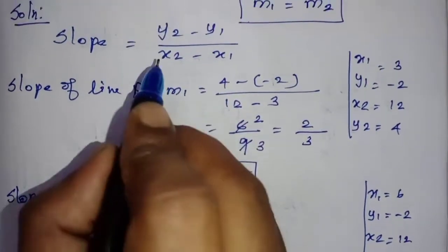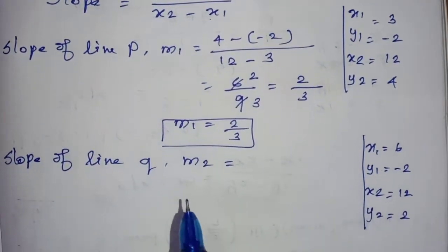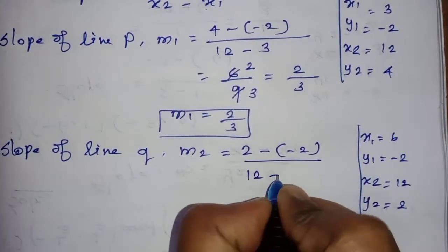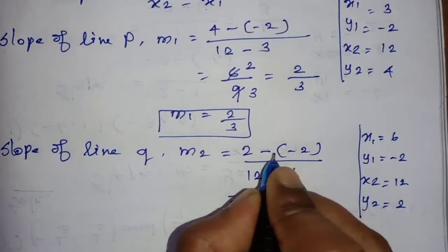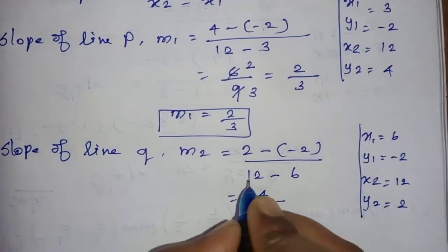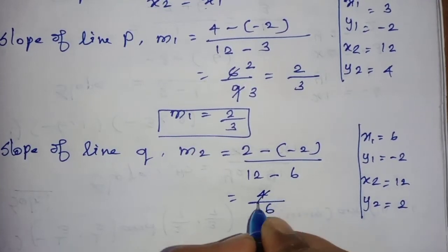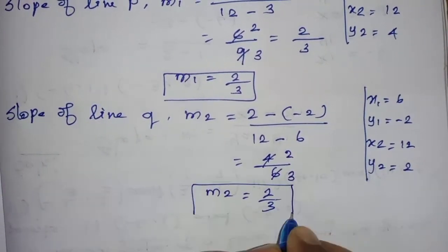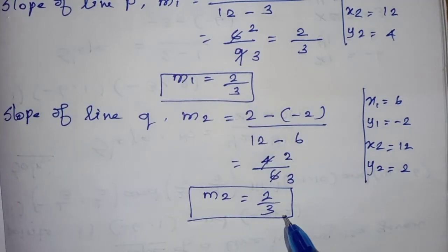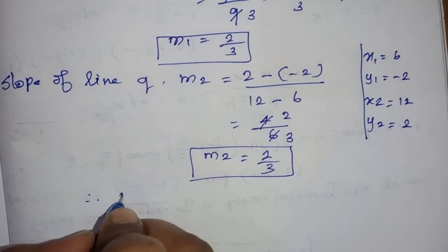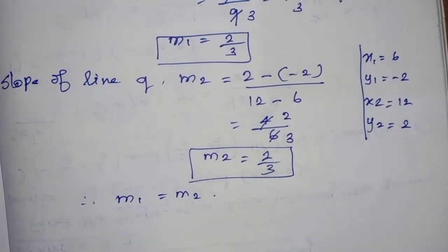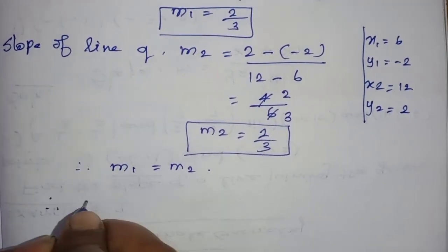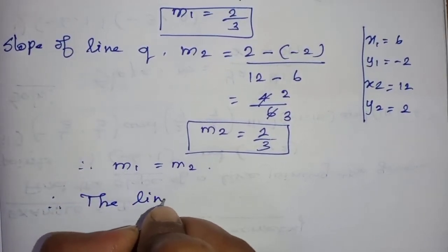y2 minus y1 by x2 minus x1. So y2 is 2 minus y1 which is -2, divided by x2 which is 12 minus x1 which is 6. Minus into minus is plus, so 2 plus 2 is 4, by 12 minus 6 which is 6. If we cancel, M2 equals 2 by 3.